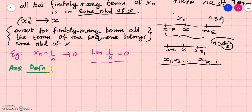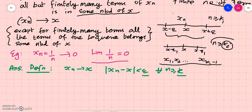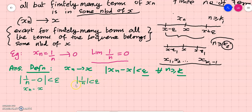A sequence xn converges to x means by our definition that modulus of xn minus x is less than epsilon for all n greater than or equal to k, and this k depends upon epsilon. In this case xn is 1/n and x is 0, so we take modulus of (1/n minus 0), which is modulus of 1/n, less than epsilon. Since 1/n is positive, modulus of 1/n equals 1/n, so we need 1/n less than epsilon.